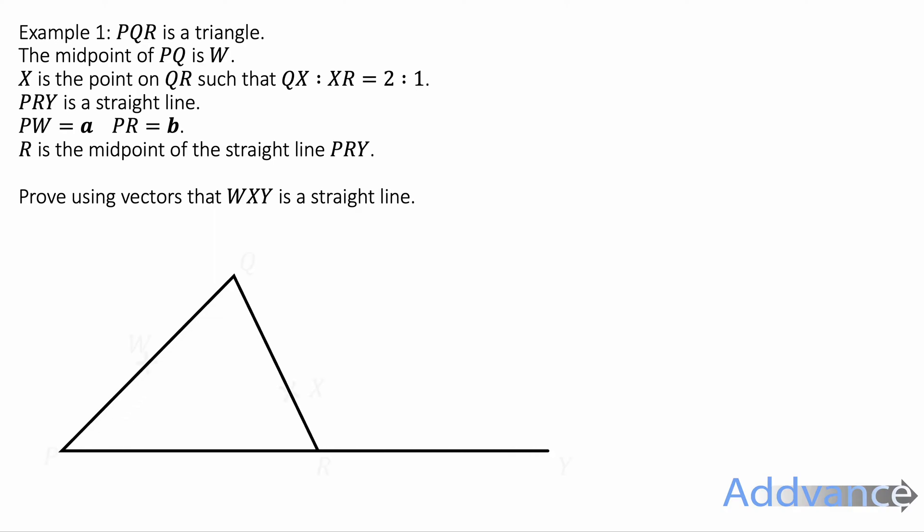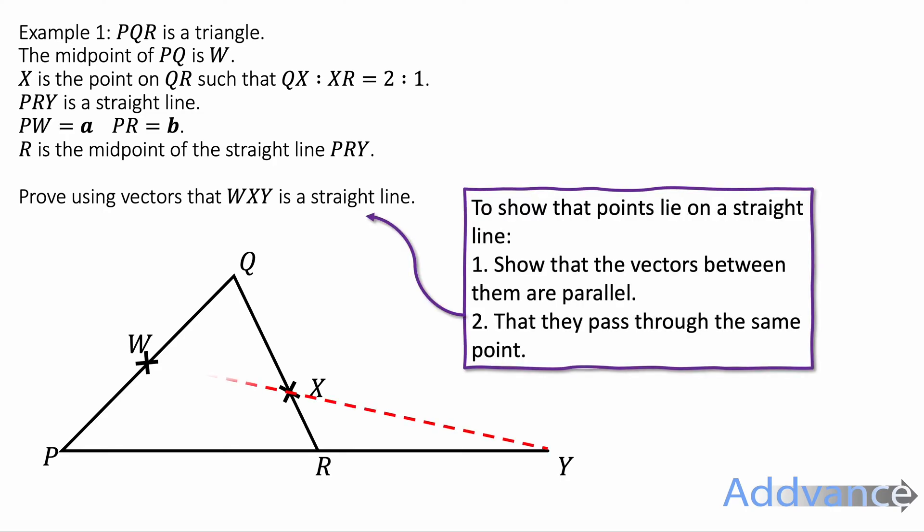This is our first proof that we're going to use in this video and we're going to try and prove that WXY lie on a straight line. To show that points lie on a straight line we need to show that the vectors between two of these points are parallel to another vector between another two of these points and that they all pass through one of these points. To show that points lie on a straight line, show that the vectors between them are parallel and that they pass through the same points.